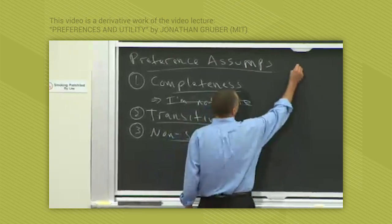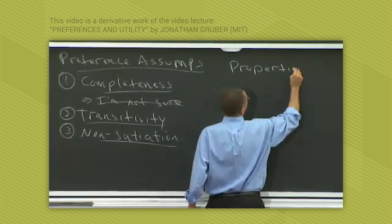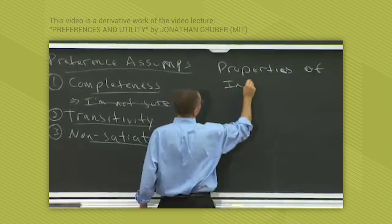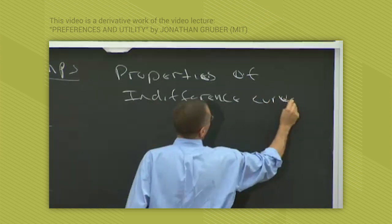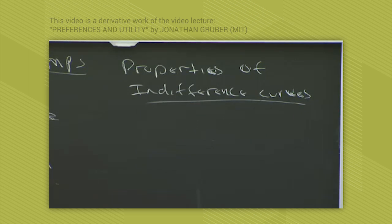Now, given these, we're going to talk about the properties of what we call indifference curves. This is why I screwed up before. Of course you can be indifferent between things—that's the whole point of economics. I haven't taught this course in about six years, so I lost track of things.